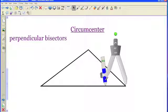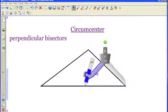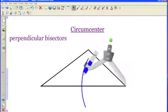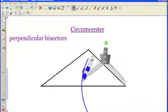All I need to do is open my compass a little bit past the halfway point, where I project the halfway point would be, and then I'm going to make an arc above and below the triangle.